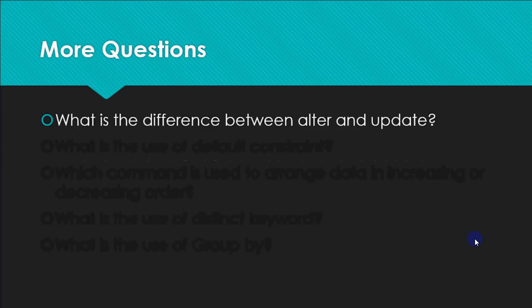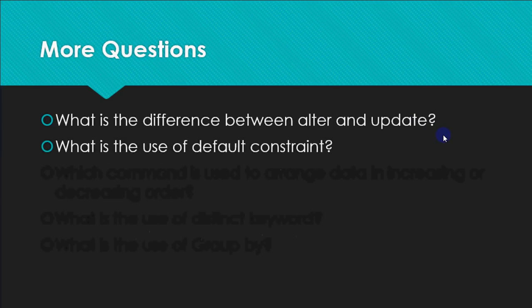The difference between ALTER and UPDATE: ALTER TABLE is a DDL command used to modify the structure of the table, while UPDATE is a DML command used to modify the data stored in the table.